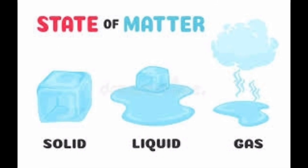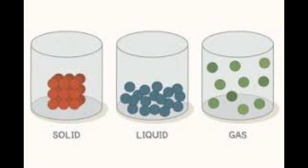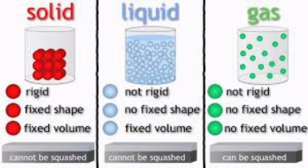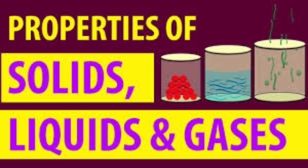Now listen. Matter can exist in three states. What are they? They are solid, liquid, and gas. These three states of matter have some properties. Let us see the properties of solids, liquids, and gases.